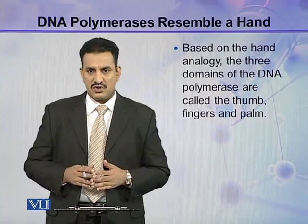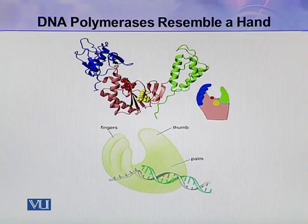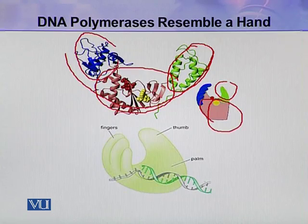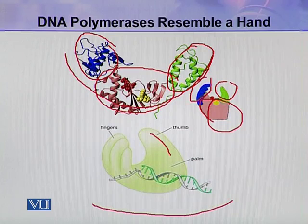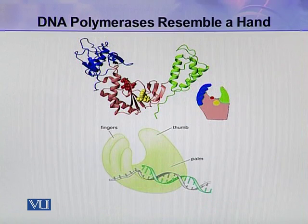These fingers, thumb, and palm all play an important role in the working of DNA polymerase. Here in this diagram, you can see the three-dimensional structure of DNA polymerase. It has three domains: one domain resembles the thumb, the other resembles the palm, and the third resembles the fingers. This DNA resides in this cleft or in this palm. This is the structure of DNA polymerase and it resembles a hand.